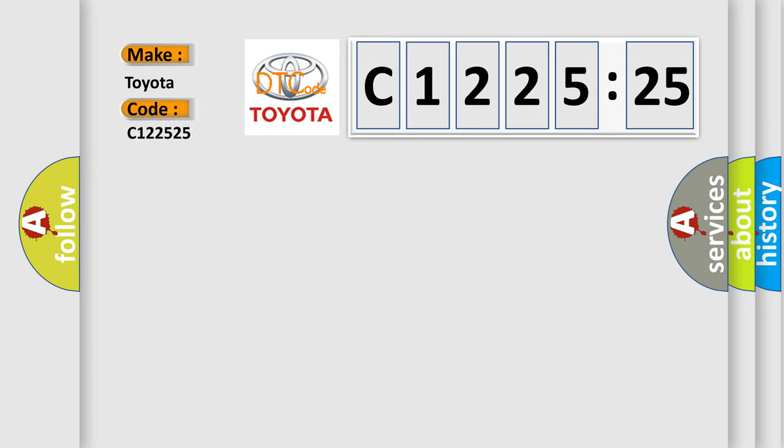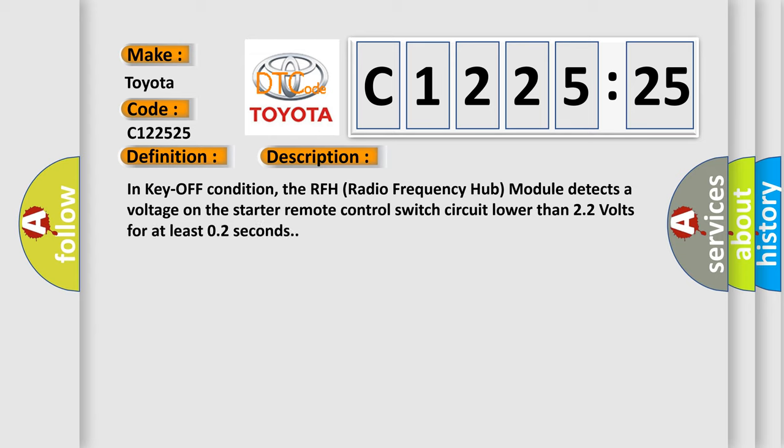So, what does the diagnostic trouble code C122525 interpret specifically for Toyota car manufacturers? The basic definition is: Starter relay circuit short to ground. And now this is a short description of this DTC code.